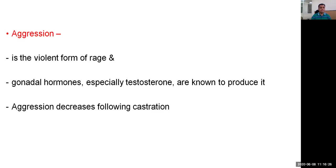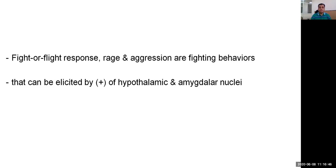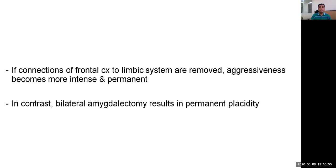Aggression is a violent form of rage. Gonadal hormones, especially testosterone, are known to produce aggression, and aggression decreases following castration. Fight-or-flight responses — rage and aggression — are fighting behaviors that can be elicited by stimulation of the hypothalamus and amygdala. If the connections of the frontal cortex to the limbic system are removed, aggressiveness becomes more intense and permanent. In contrast, bilateral amygdalectomy results in permanent placidity.